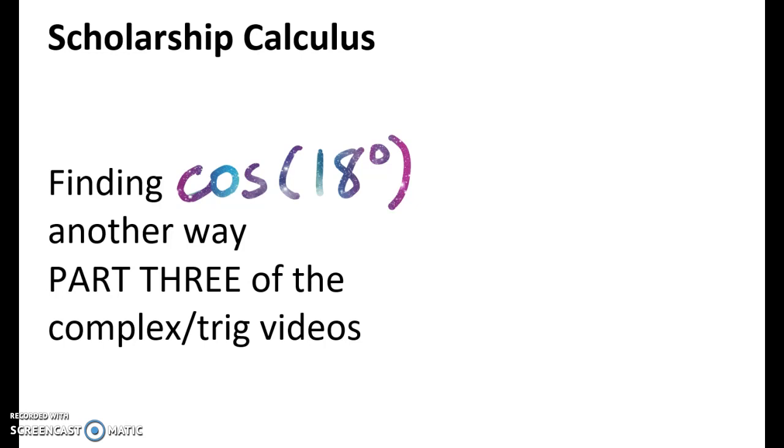So I strongly recommend that you at least have a look at the first two videos because they are based on De Moivre's theorem and getting an expression for cos of 5θ. But I'm going to pretend we've never done that and suppose that you're just sitting in the exam or in real life trying to solve this problem of what is the cosine of 18 degrees. So I want to go through what comes into my head when I see that.